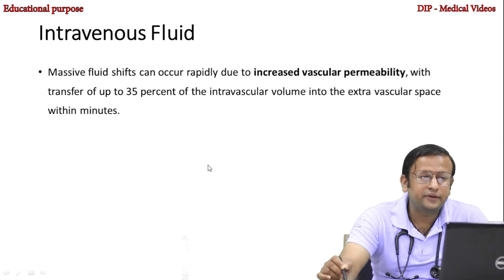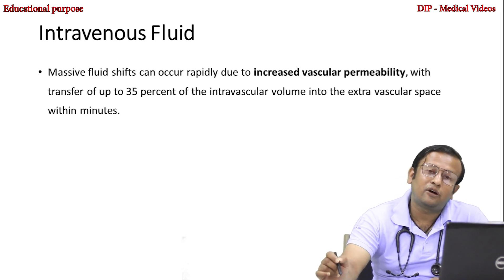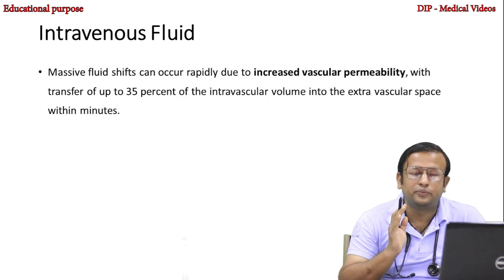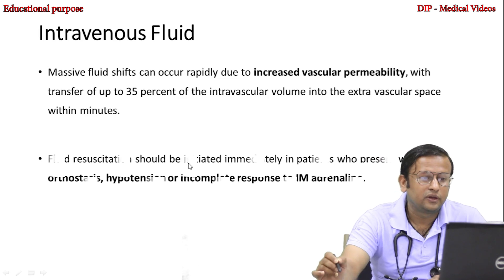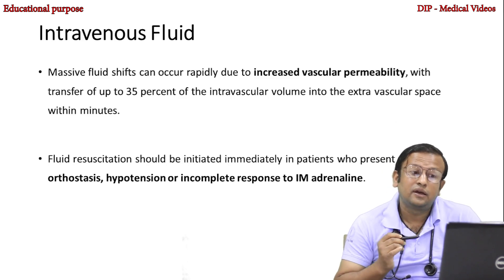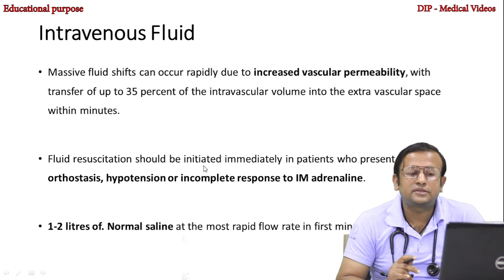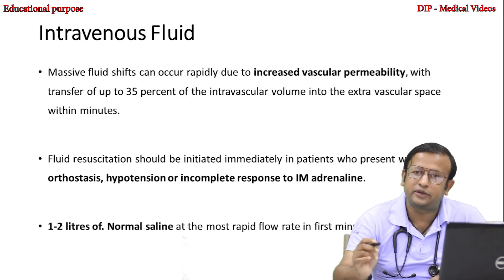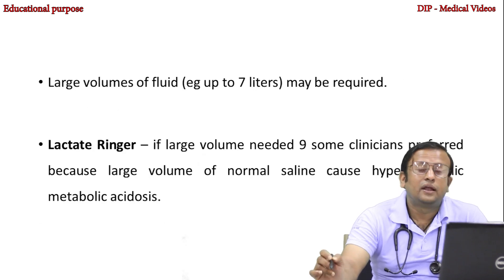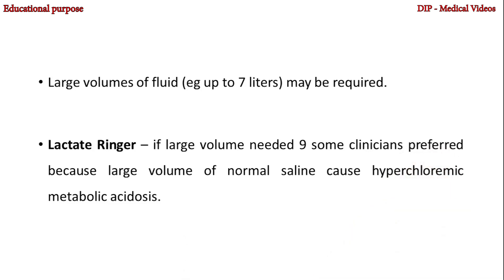Intravenous fluid is very necessary. Massive fluid shifts can occur rapidly due to increased vascular permeability, with transfer of up to 35% of intravascular volume into the extravascular space within minutes. Fluid resuscitation should be initiated immediately in patients who present with orthostasis, hypotension, or incomplete response to initial IM adrenaline. Give 1 to 3 liters of normal saline at the most rapid flow rate in the first minutes of treatment. Large volumes may be required — up to 7 liters. Lactated Ringer's can be used if large volumes are needed, as large volumes of normal saline cause hyperchloremic metabolic acidosis.